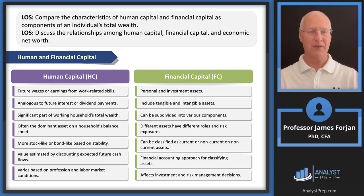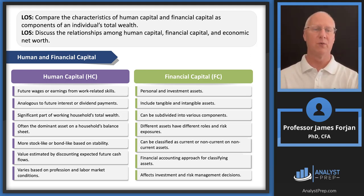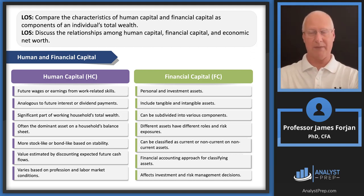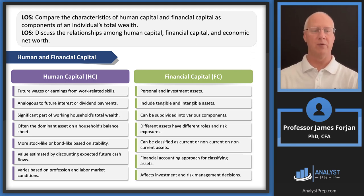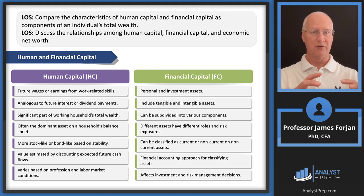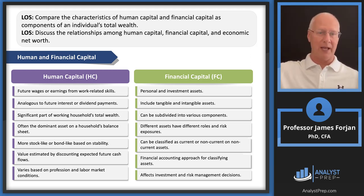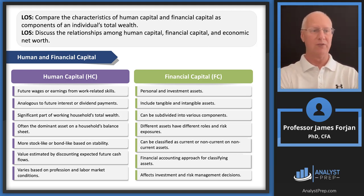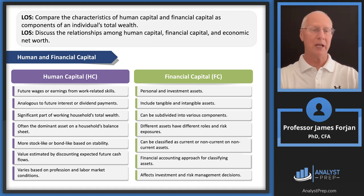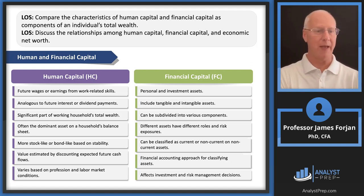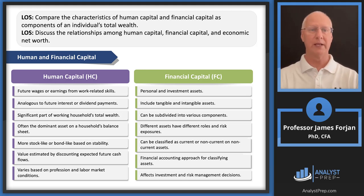We can take the present value of those interest-like and dividend-like payments, requiring some kind of interest rate — we'll discuss what's relevant shortly. Human capital varies based on profession and labor market conditions. Think about this at the micro level — the individual client — then expand out to the macro economy, considering industry, profession, labor market, GDP, and political factors. You can relate unsystematic and systematic risk conversations from Levels 1 and 2 to this idea of human capital.